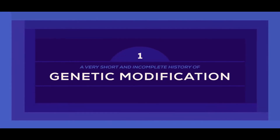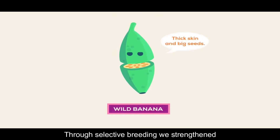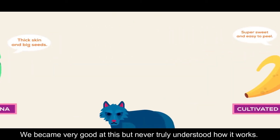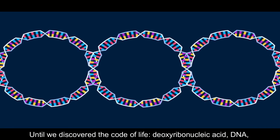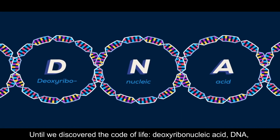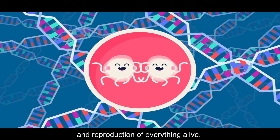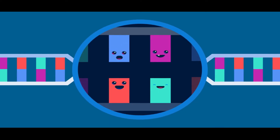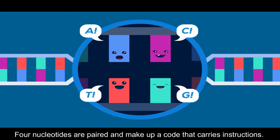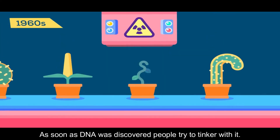Let's talk about where genetic engineering came from and what we're doing right now. Humans have been engineering life for thousands of years through selective breeding, selecting useful traits in plants and animals. We became very good at this, but never truly understood how it worked until we discovered the code of life — DNA, a complex molecule that guides the growth, development, functions, and reproduction of everything alive. Information is encoded in the structure of the molecule; four nucleotides are paired and make up a code that carries instructions. Change the instructions and you change the being carrying it.